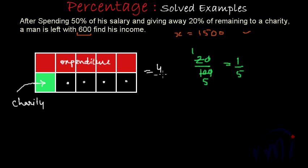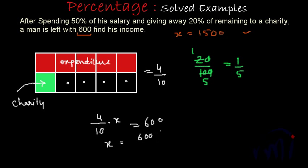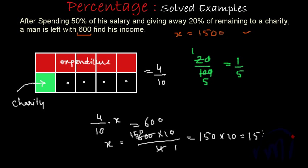What fraction of his salary is he left with? It is 4 out of 10. So 4 out of 10 of x equals 600. Therefore x equals 600 multiplied by 10 divided by 4, which simplifies to 150 multiplied by 10, that is 1500. So this is how you can solve it using fractions.